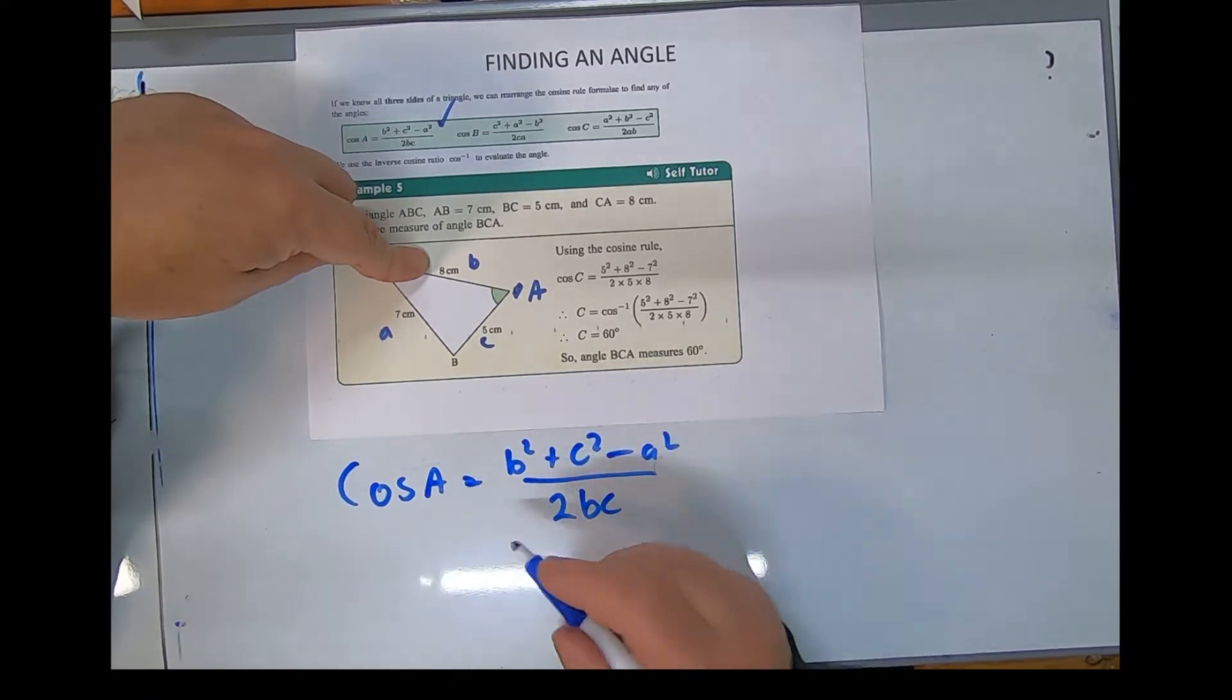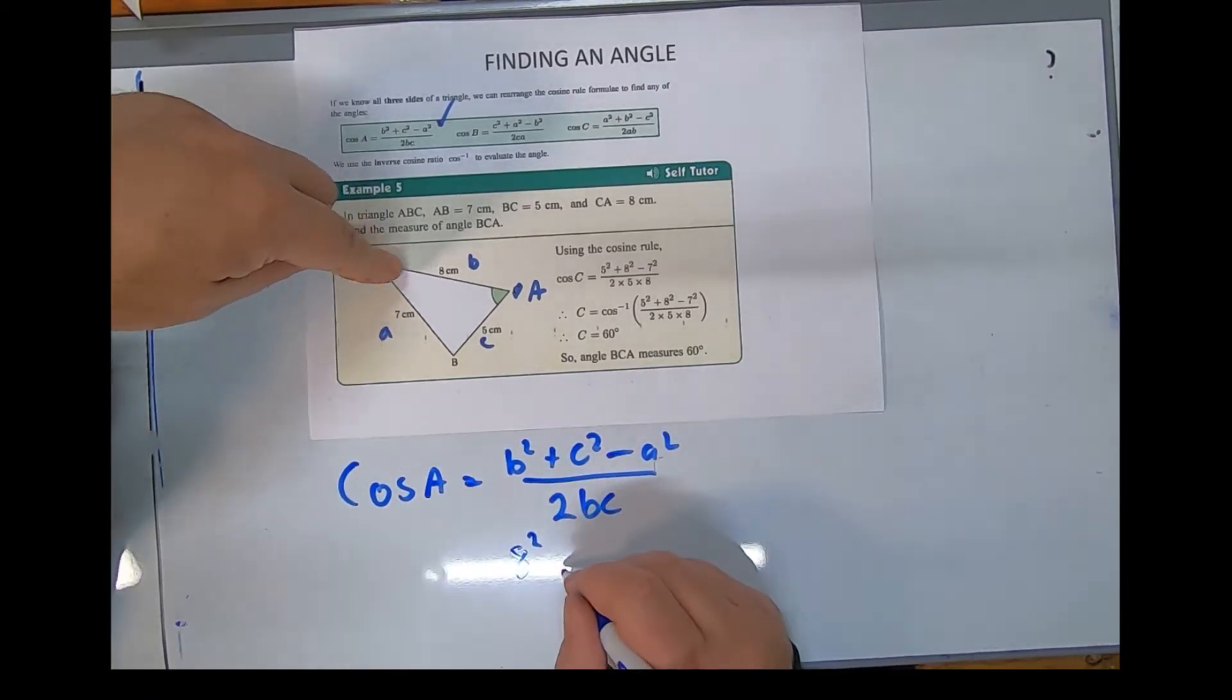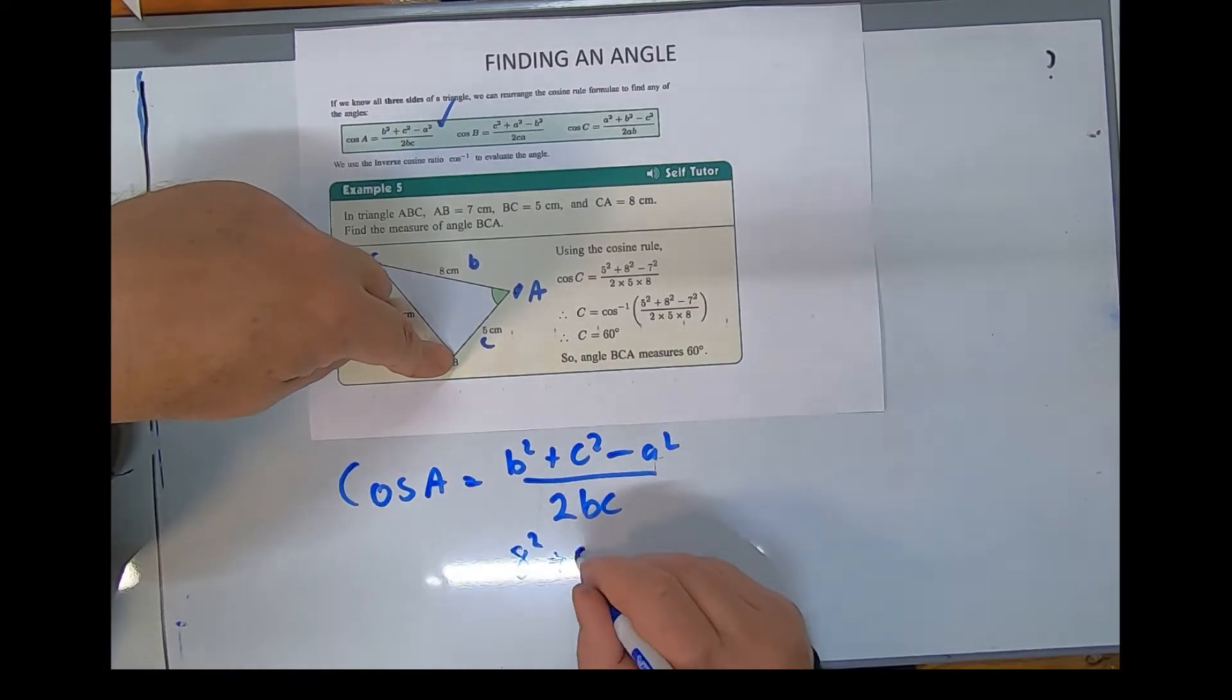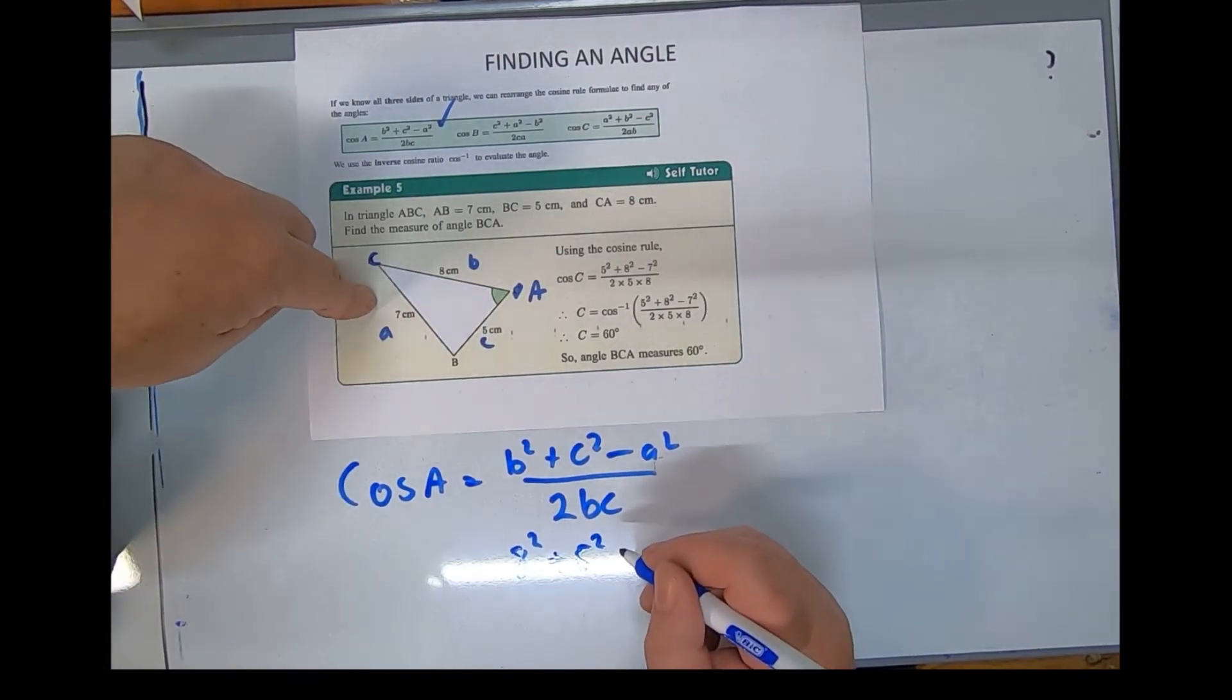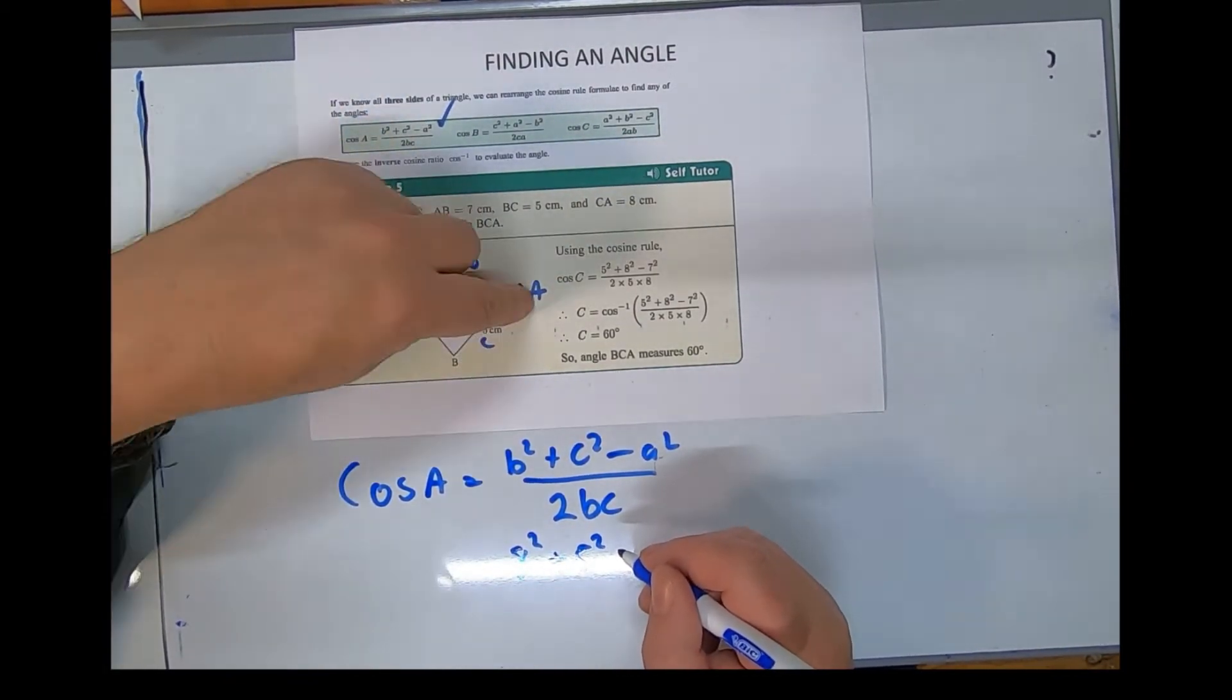B is 8, so 8². C is 5, so 5². A, or the opposite one—the one that's been subtracted—is always opposite.